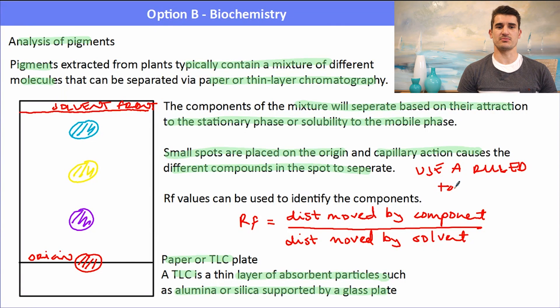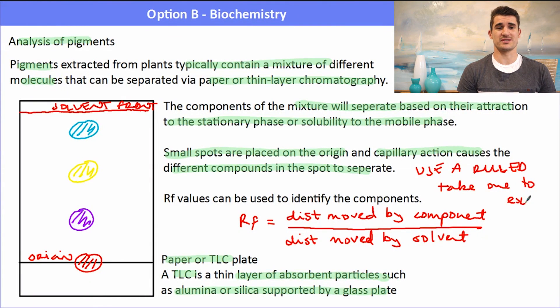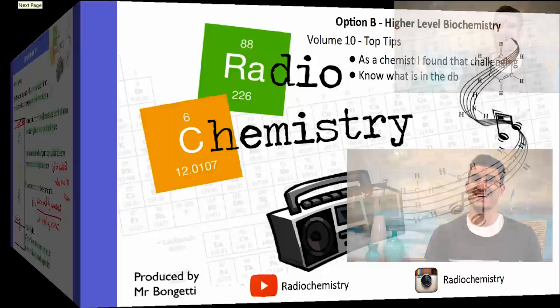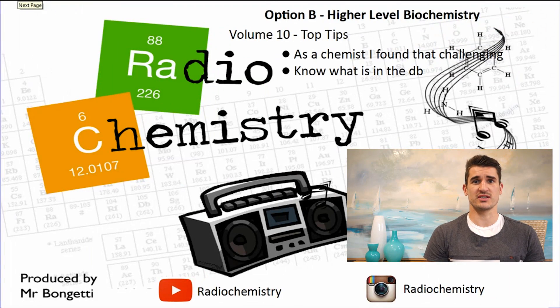Some top tips for volume 10: as a chemist I've found this section of the course particularly challenging. Make sure you use the data book and know what structures are in it to help you out. Thanks for watching — don't forget to drop a like on the video, subscribe for more, and if I've made any errors please let me know. See you soon.